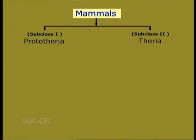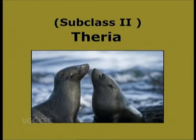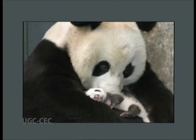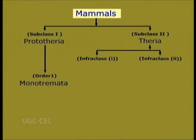Subclass 2: Theria. Ther meaning animals. They are modern and typical animals. These are the mammals which give birth to living young ones, that is why they are called viviparous animals. This is subdivided into two infraclasses: Metatheria and Eutheria.